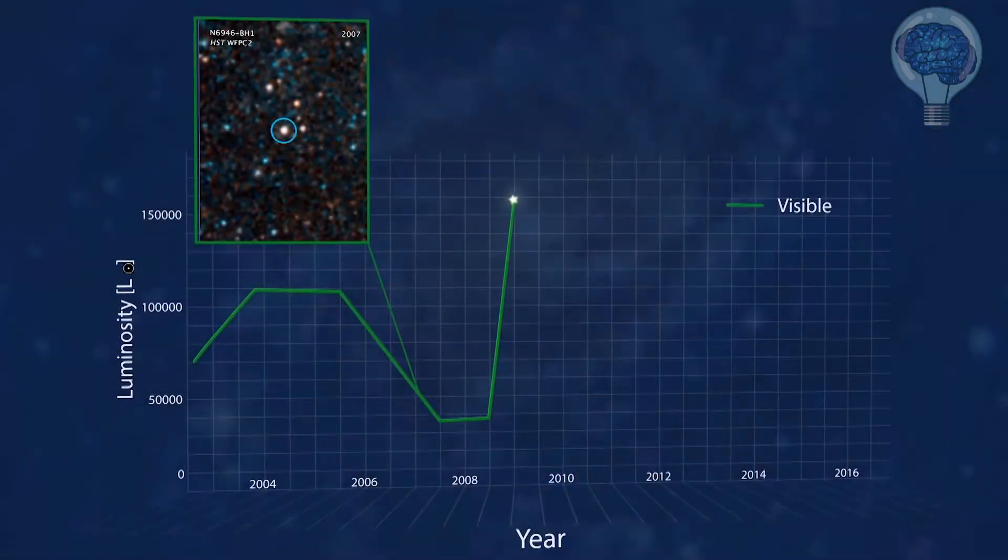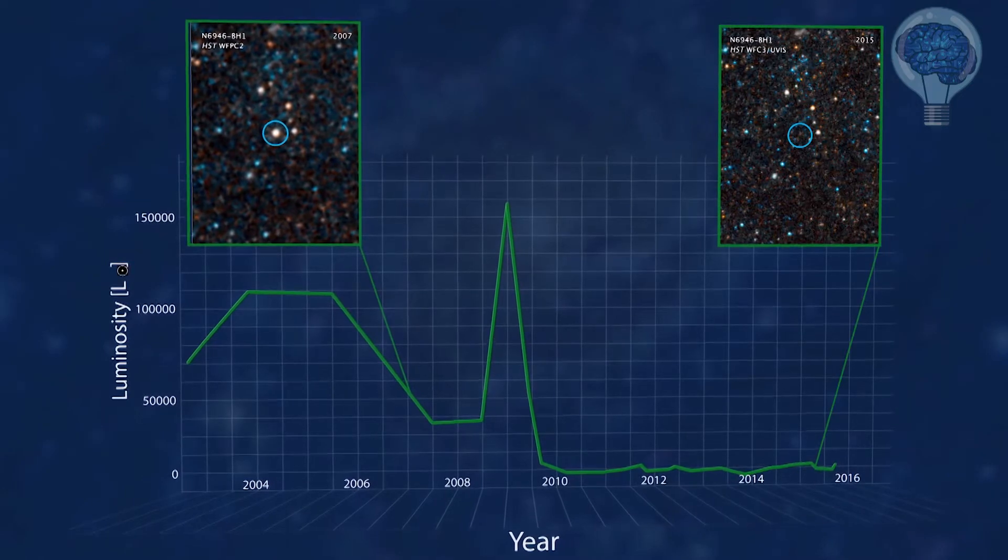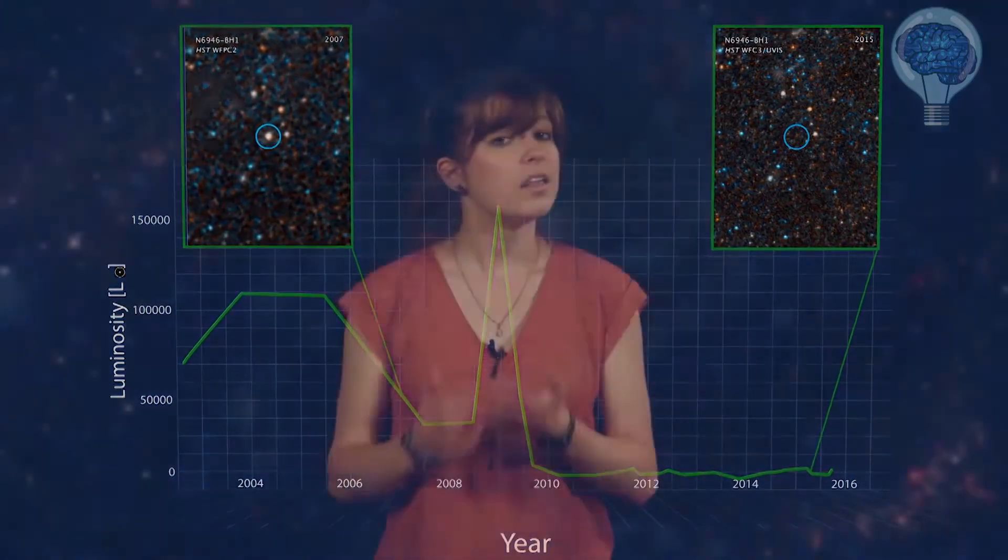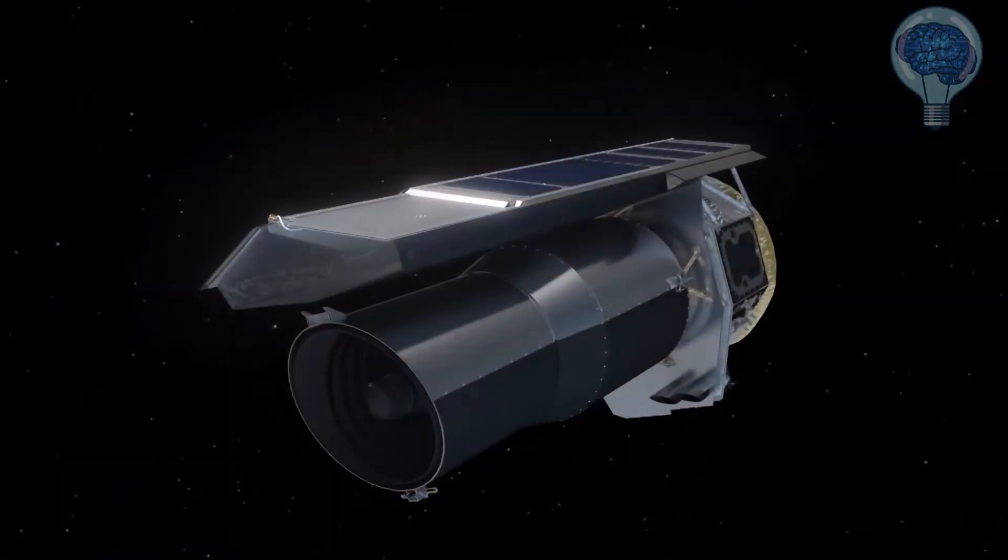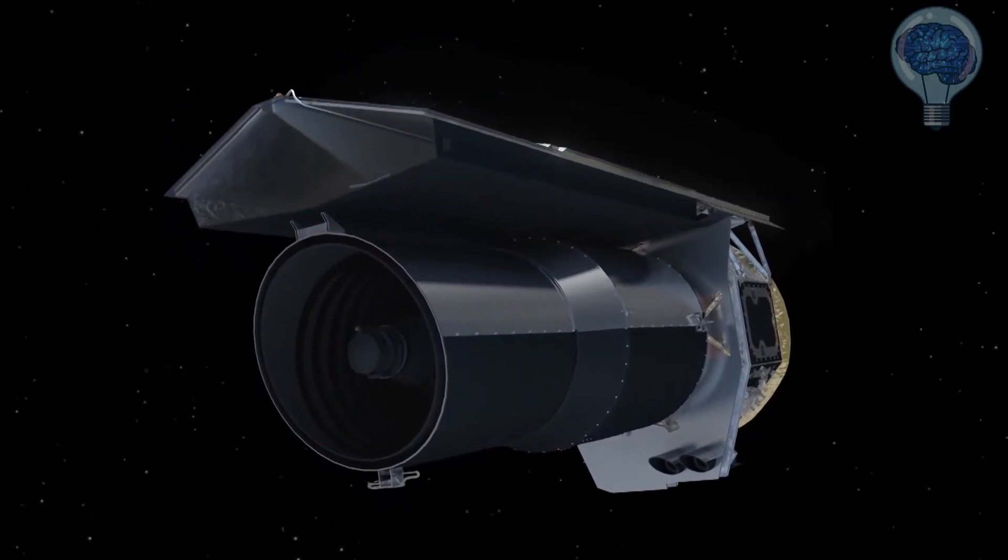So the star got brighter in visible light in 2009, and then disappeared in visible light. How do we know it's not just hidden behind a cloud of dust or something? The team checked for that. They looked at infrared observations from the Spitzer Space Telescope, which would be able to see the heat of dust warmed by the star.